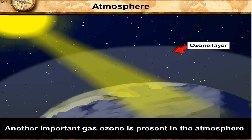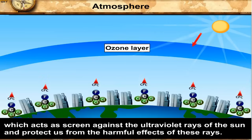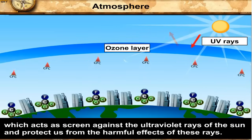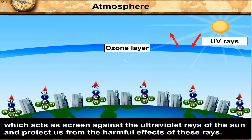Another important gas, ozone, is present in the atmosphere which acts as a screen against the ultraviolet rays of the sun and protects us from the harmful effects of these rays.